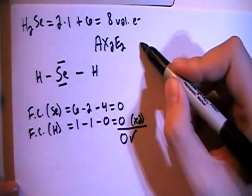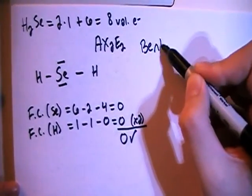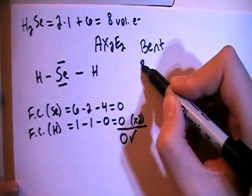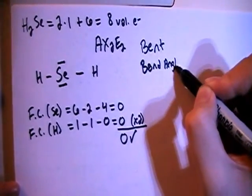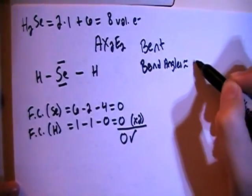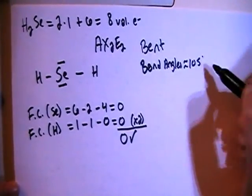With that kind of shape, it's going to be called the bent shape. And when you have the bent shape, the bond angles are approximately 105 degrees.